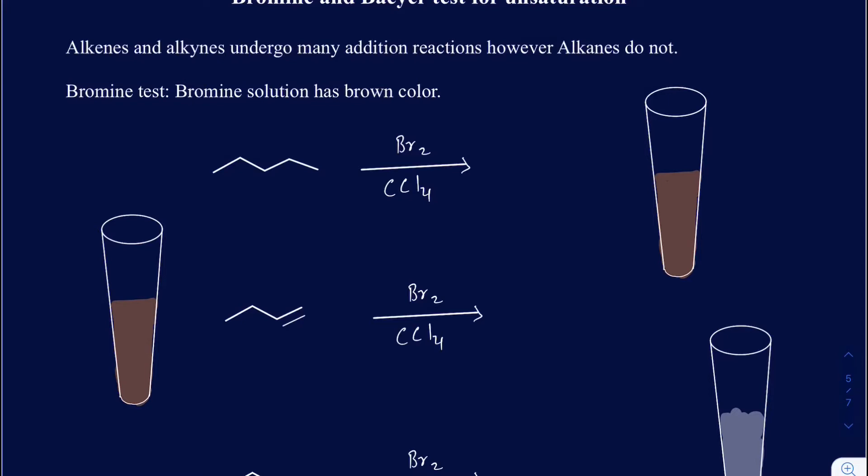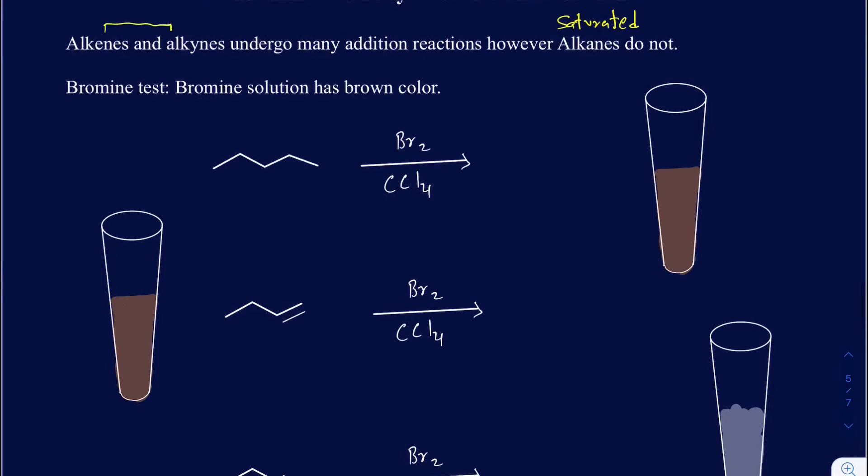Suppose you're given a compound that's either going to be an alkene, alkyne, or an alkane. You've got the alkanes that are going to be your saturated compound, and you've got your alkenes and alkynes that are going to be unsaturated.